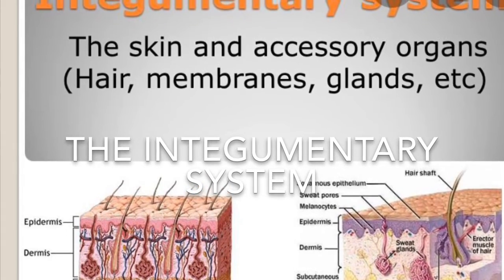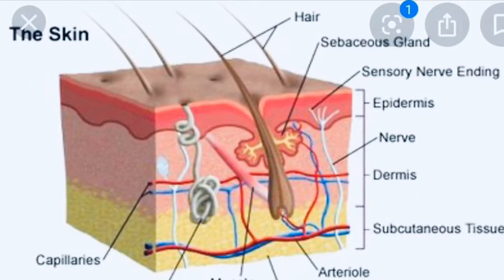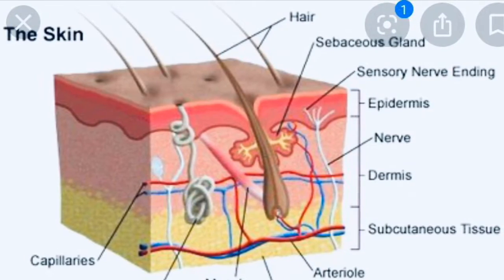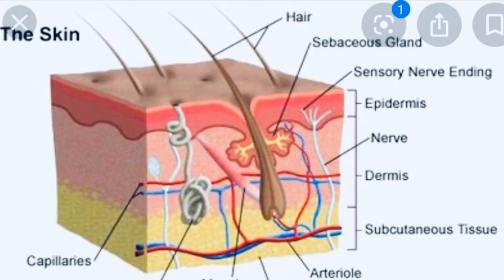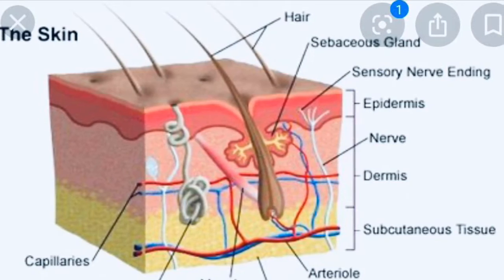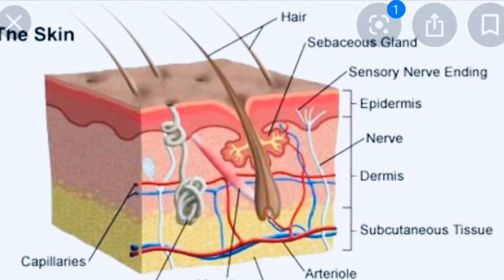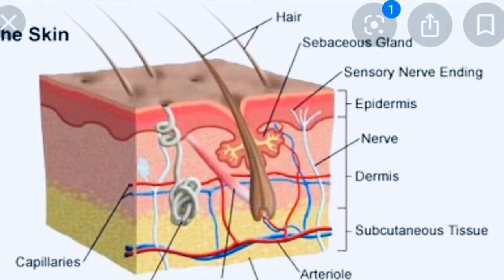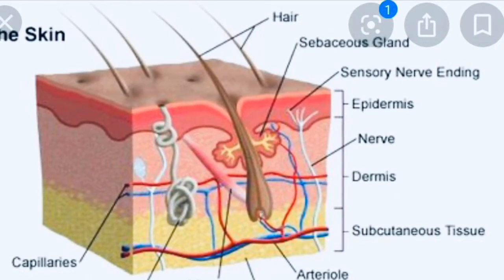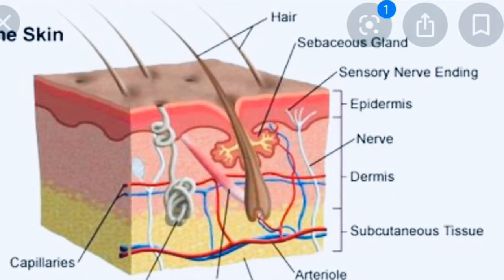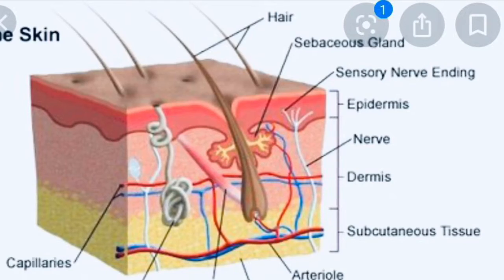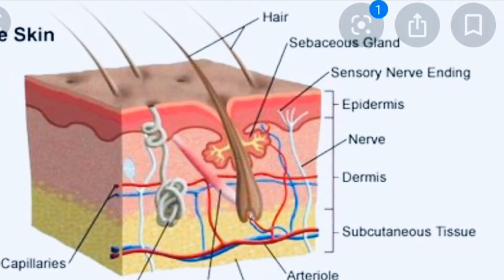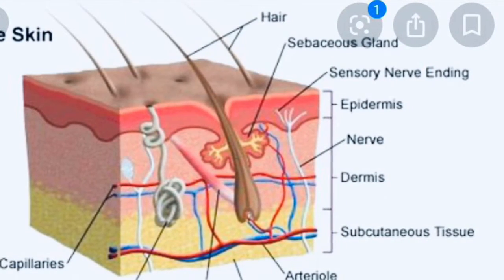The skin, which is part of the system, is composed of three layers: the epidermis, made up of closely packed epithelial cells; the dermis, made of dense irregular connective tissue that houses blood vessels, hair follicles, sweat glands, and other structures; and the bottom layer, subcutaneous tissue.